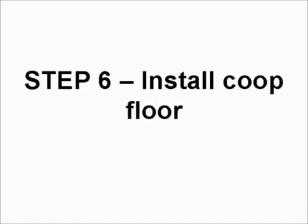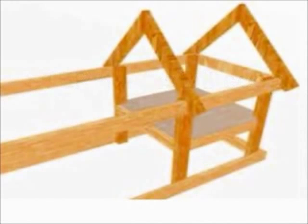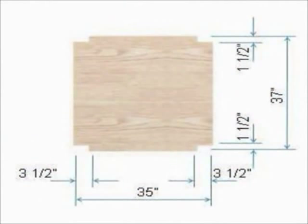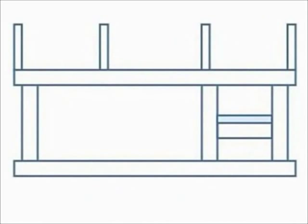Step six, install the coop floor. Using half inch ply, cut a shape measuring 35 inches by 37 inches. Now cut out the notches as per this detailed shape drawing. Place the coop floor on top of the coop floor supports and fasten them with 40 nails.